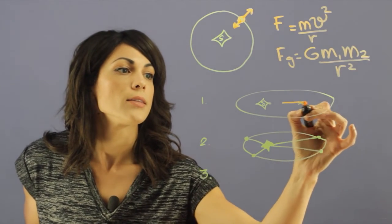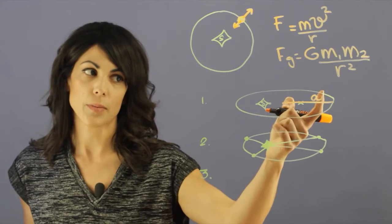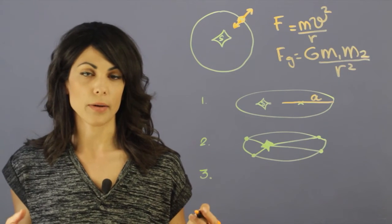This length is the semi-major axis, generally denoted by a, and this is a very important number to know when you look at a planet's orbit.